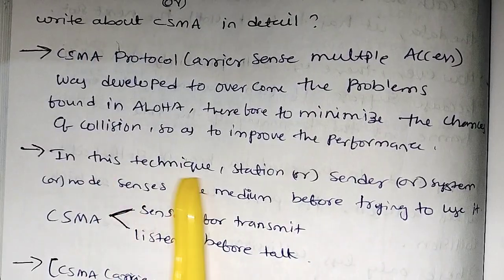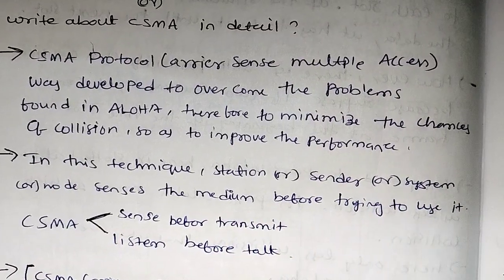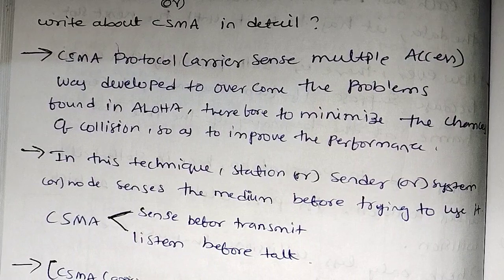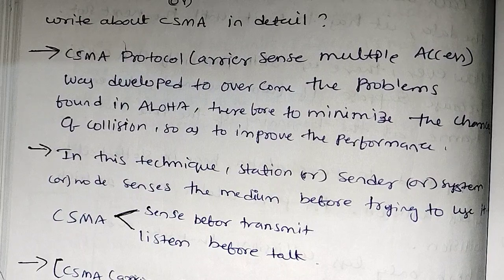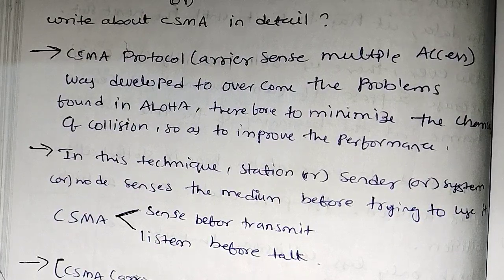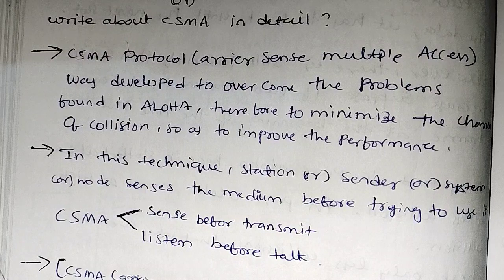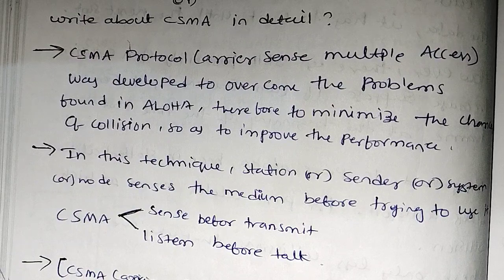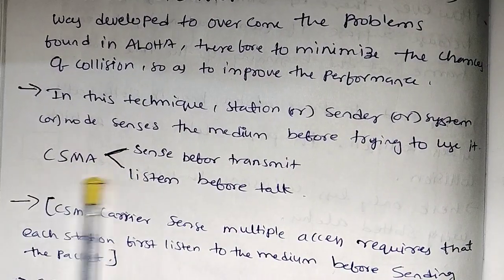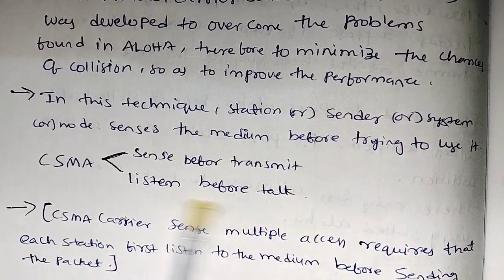In this technique, stations or sender systems or nodes sense the medium before trying to use it. When data needs to be sent, the system or node checks the medium — like a wire — to detect whether there are signals present, such as digital or analog signals.